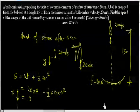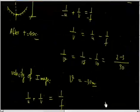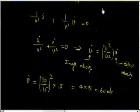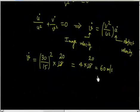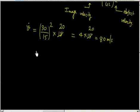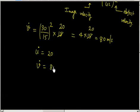Checking: the object velocity is 20 meters per second (not 15 as mistakenly used earlier). So v̇ = 4 × 20 = 80 meters per second. The image is falling at 80 meters per second — four times the object's velocity of 20 meters per second.